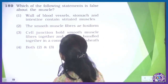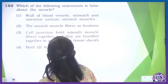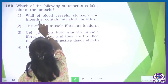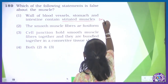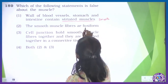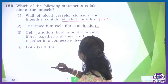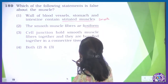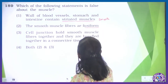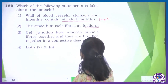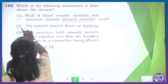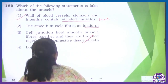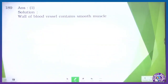Question 189: which of the following statements is false about muscle? The wall of blood vessels, stomach, and intestine contains striated muscle — no, it contains smooth muscle. So this is false. The smooth muscle fiber is fusiform — correct. Cell junctions hold smooth muscle fibers together and they are bundled in connective tissue sheath — correct. Both 2 and 3 are correct statements. So the false statement is the first one — question 189, the first option is the incorrect (false) option.